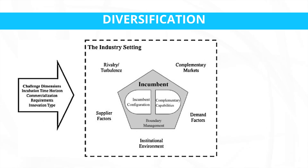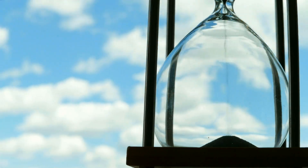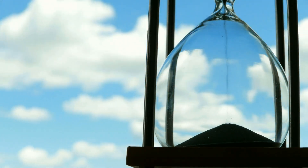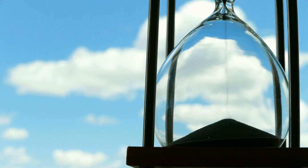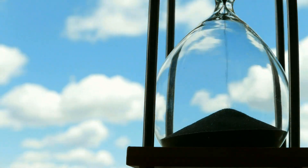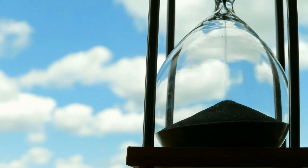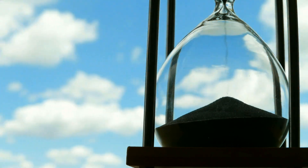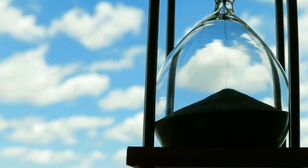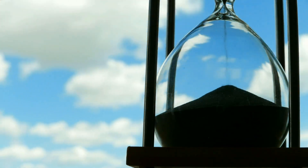Who is harmed most by implementing diversification of the economy? Incumbent industries — established industries heavily reliant on government support or protection — may face challenges when confronted with new competition from emerging sectors. Additionally, diversification efforts might require short-term sacrifices, which could be perceived as harmful to those who face immediate disruptions.